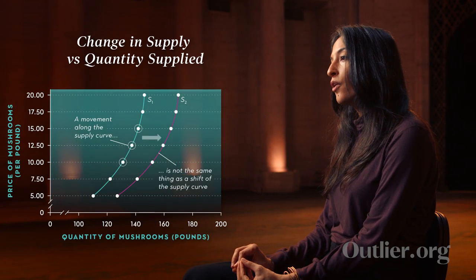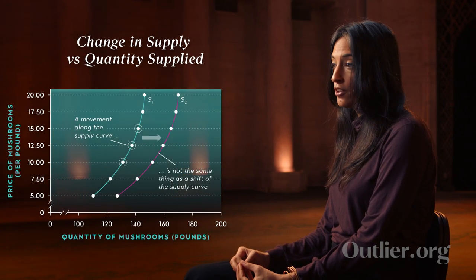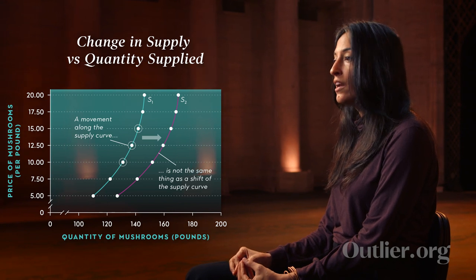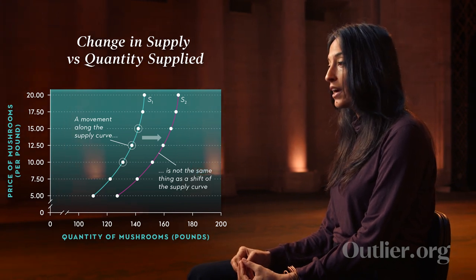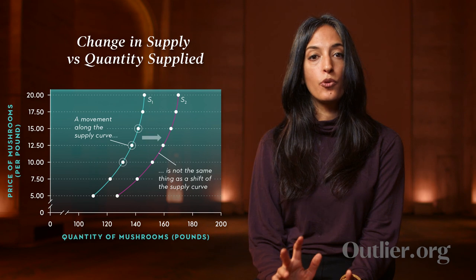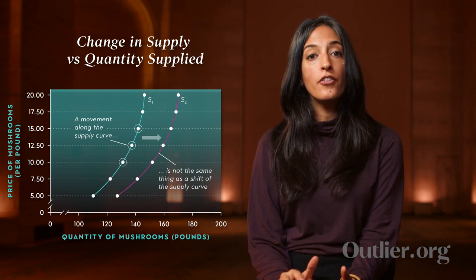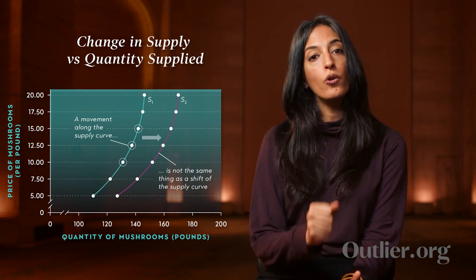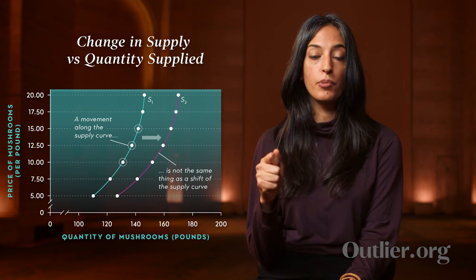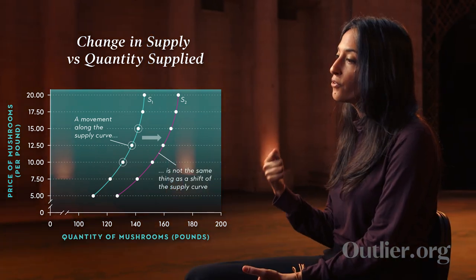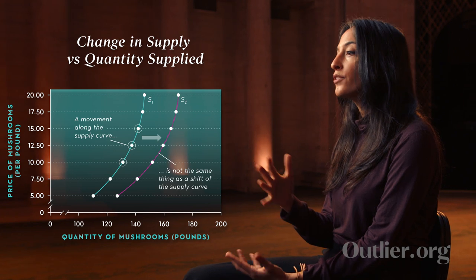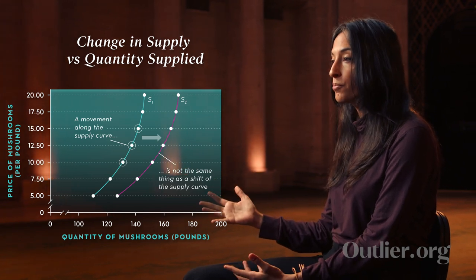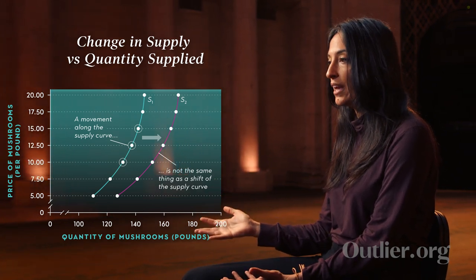Just as in the case of demand, the supply curve is showing us the quantity that sellers are willing to supply only as a function of price. But the quantity that sellers are willing to supply is a function of other factors as well, that we're holding constant on a static supply curve. And if any of those factors changes, we're going to move the entire supply curve, just as we did with demand.